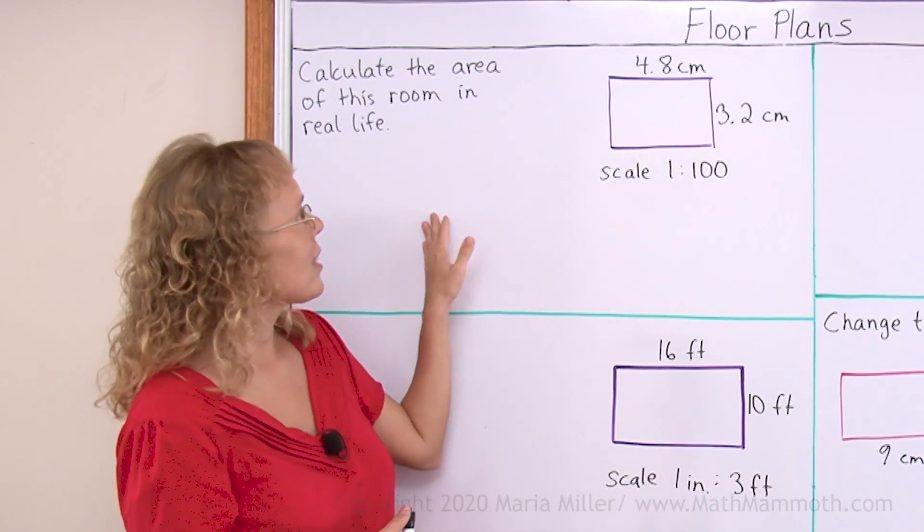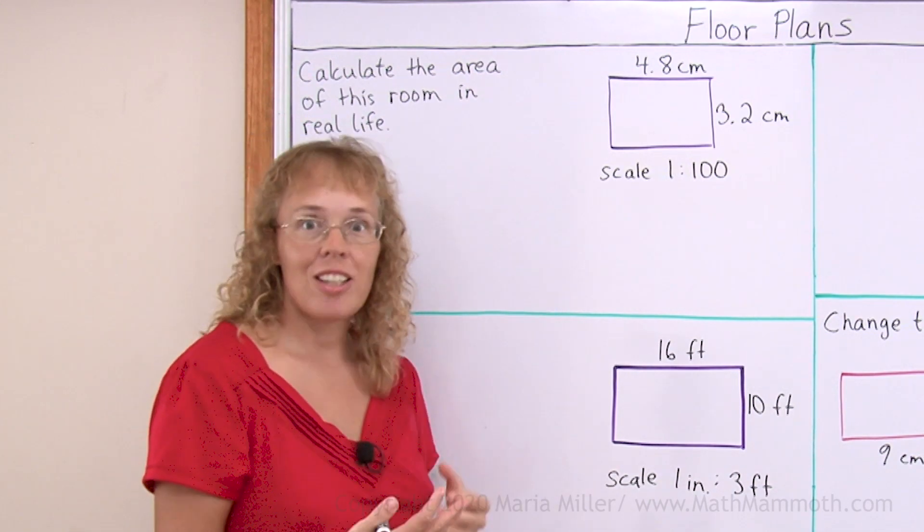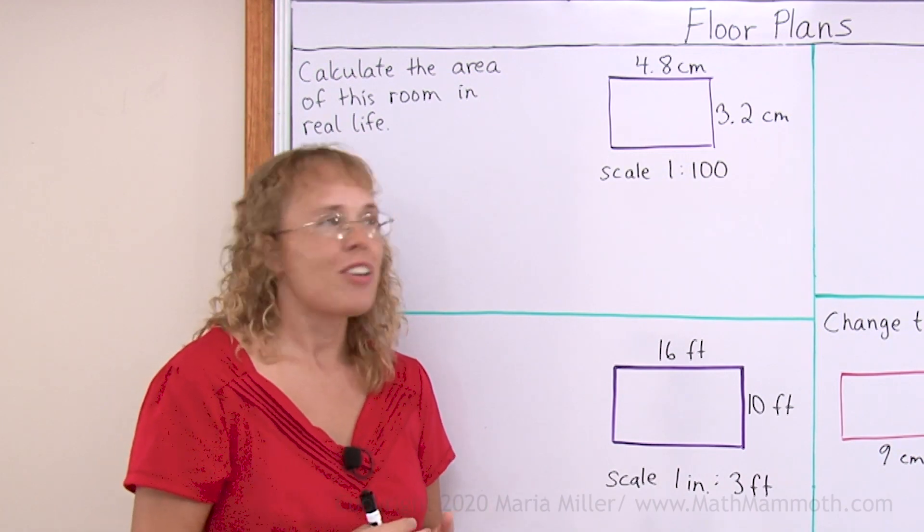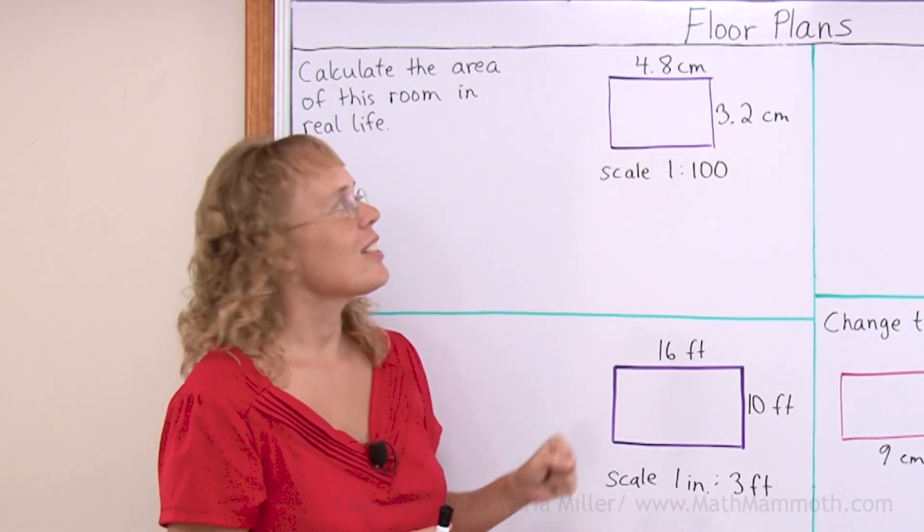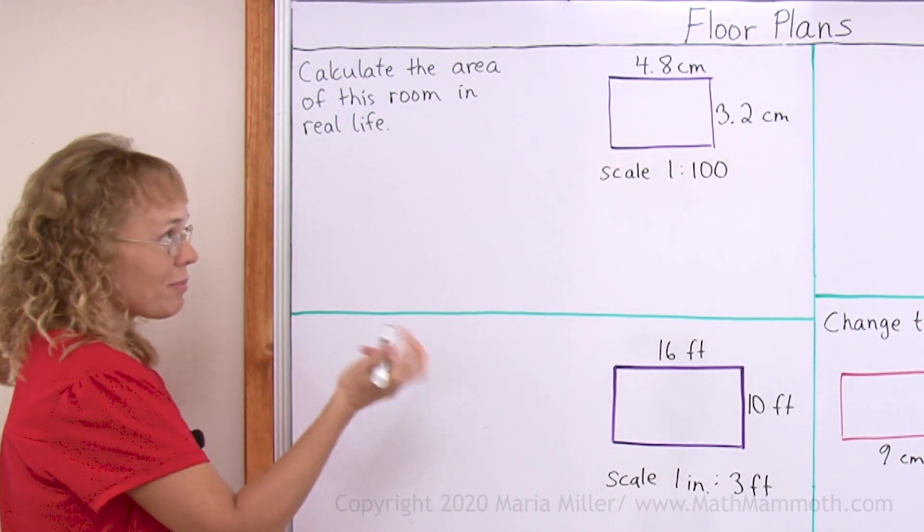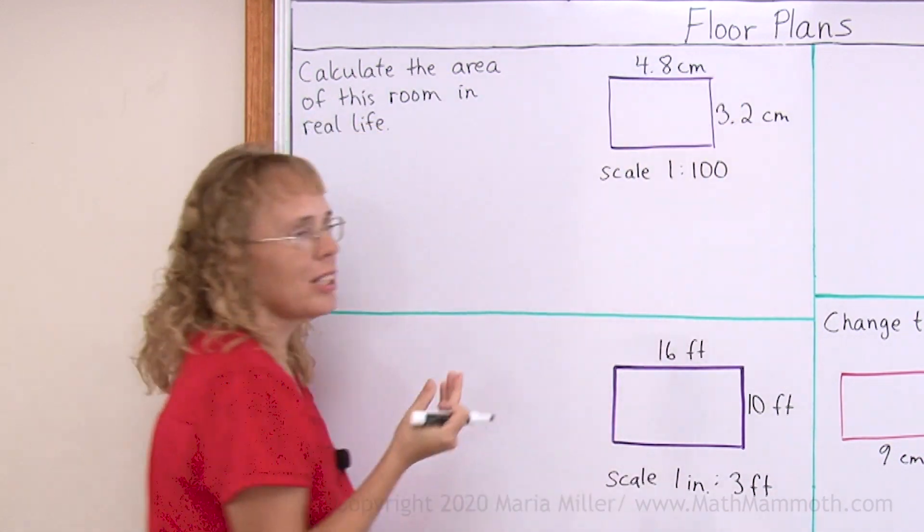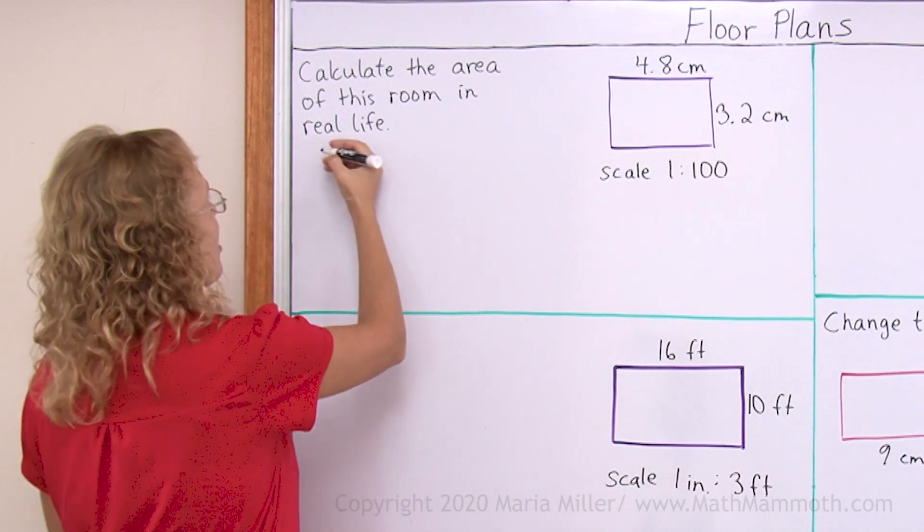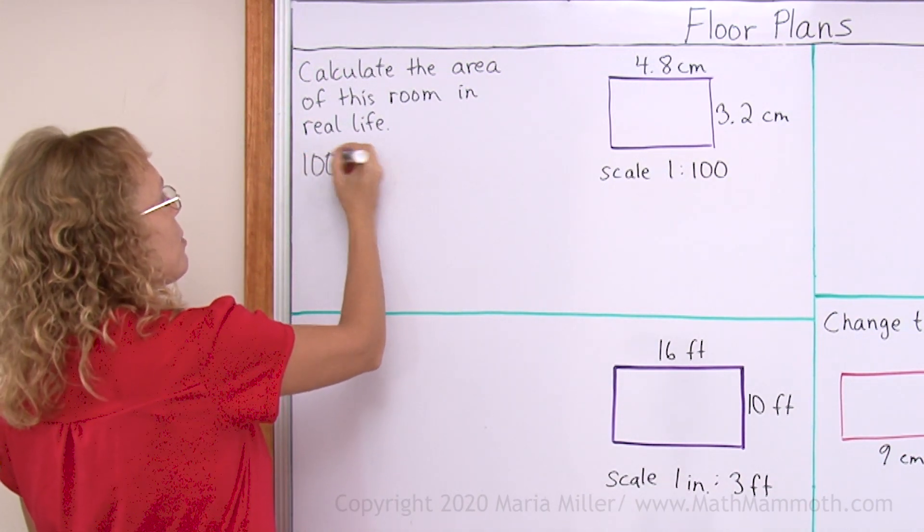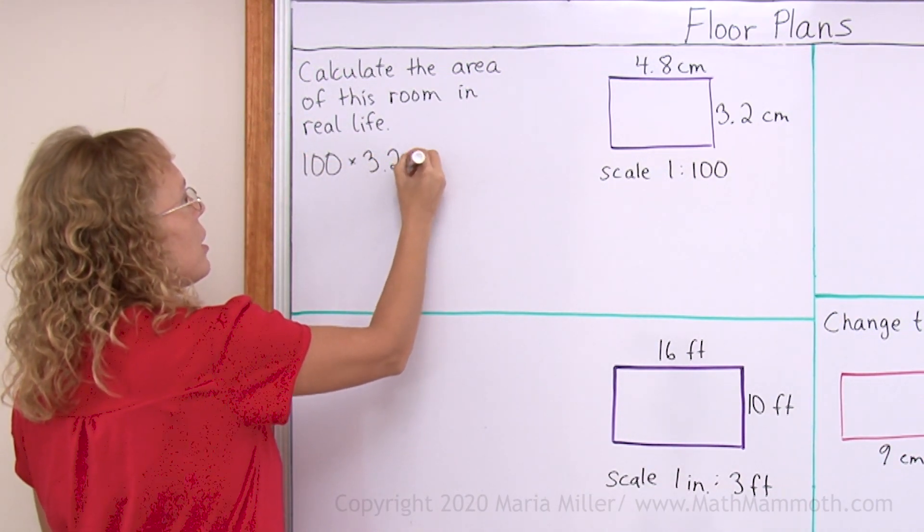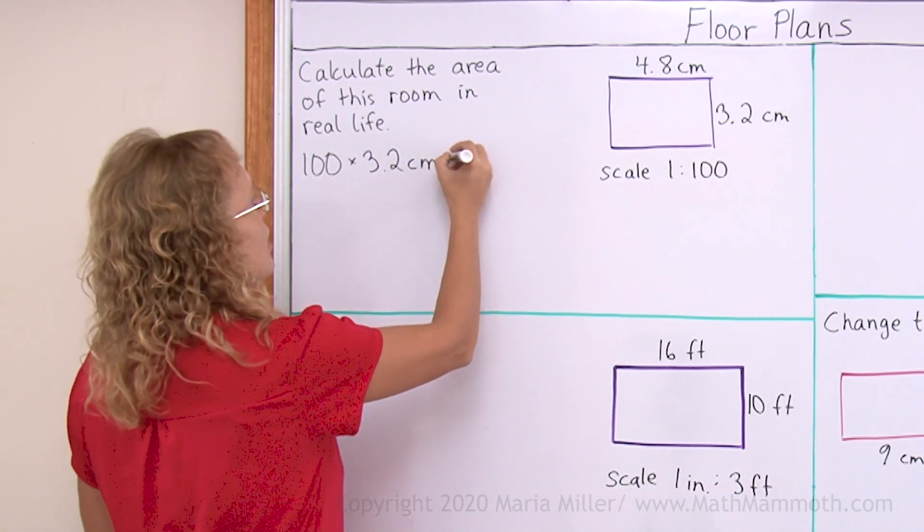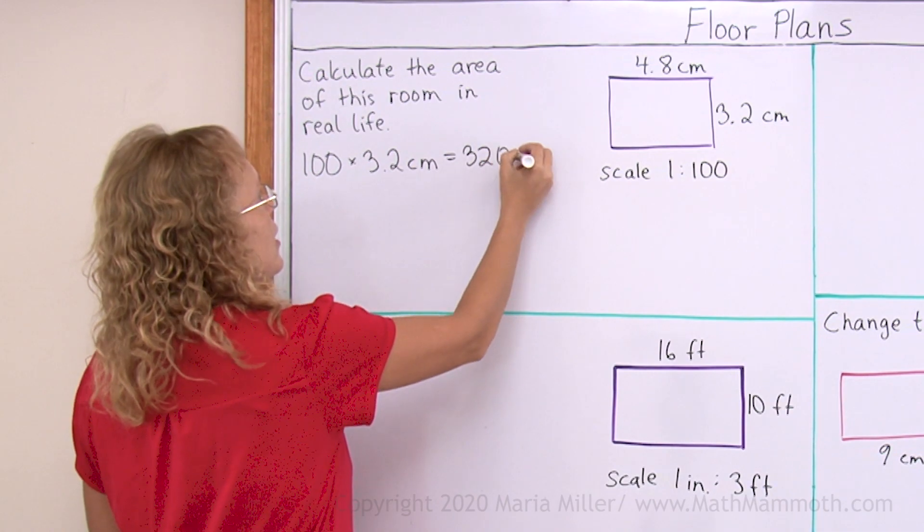And now the task is to calculate the area of this room in reality. To do that we first need to find these side lengths in reality. If this measures 3.2 cm in the plan, in reality it is 100 times that much. So we calculate 100 times 3.2 cm. 100 times 3 would be 300, so this is 320 cm,